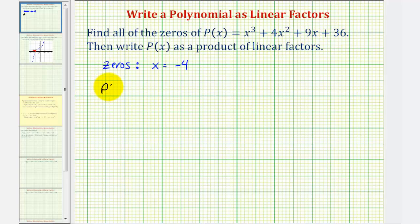Which means we can write p(x) as p(x) equals the linear factor of x + 4. Notice x = -4 makes this factor equal to zero. The remaining factor would be a degree two factor or a quadratic factor. So to find this quadratic factor, we're going to take our polynomial function and divide by x + 4.